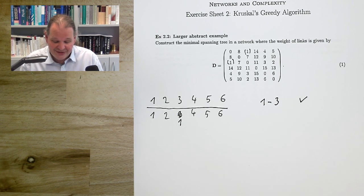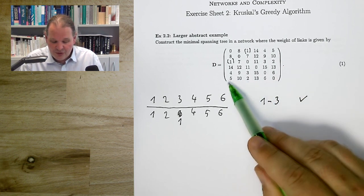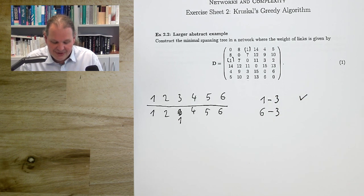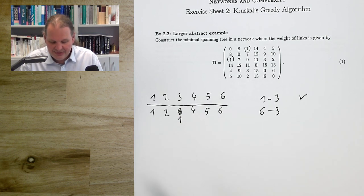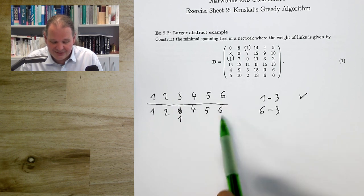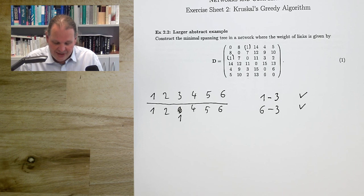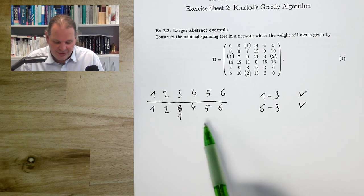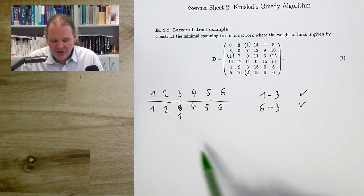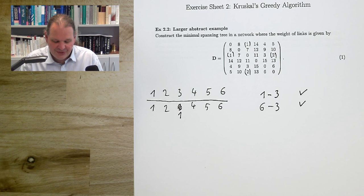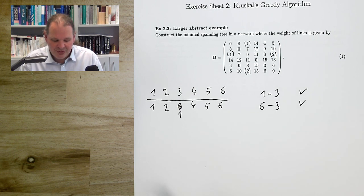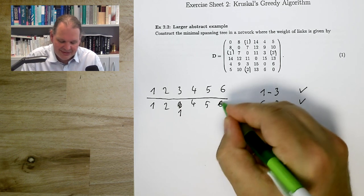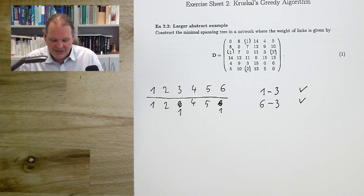The second link has length 2, from node 6 to node 3. Checking the table: 3 is in component 1, 6 is in component 6 — different components, so we place this. I replace node 6's component label with 1. Second link done.